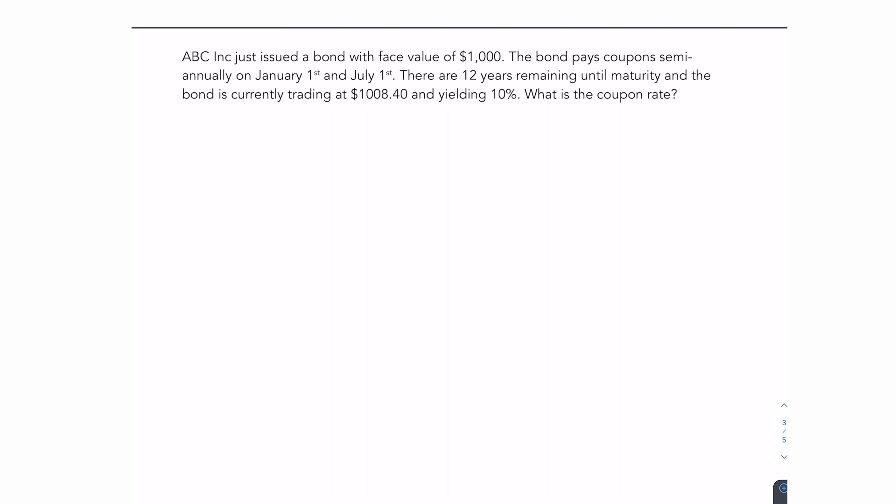Question number three, ABC Inc. just issued a bond with a face value of $1,000. The bond pays coupons semi-annually on January 1st and July 1st. There are 12 years remaining until maturity. The bond is currently trading at $1,008.40 and yielding 10%. What is the coupon rate?